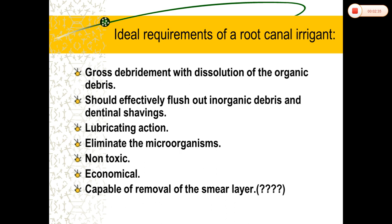The irrigant should also prevent the formation of a smear layer during instrumentation, or have the property of dissolving it once formed. It should have a low surface tension so it can easily flow into inaccessible areas of the root canal. It must not weaken the root structure.